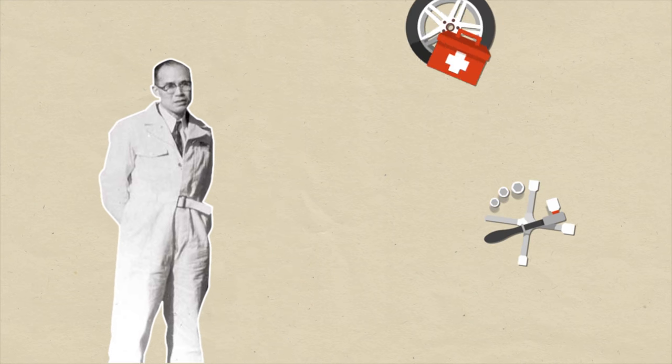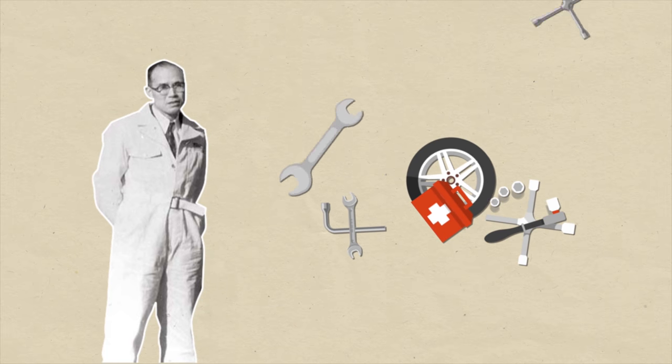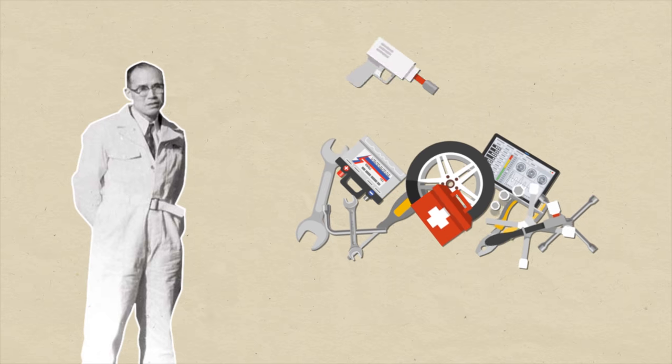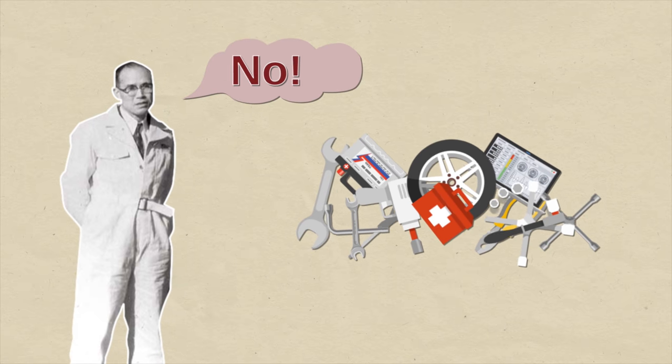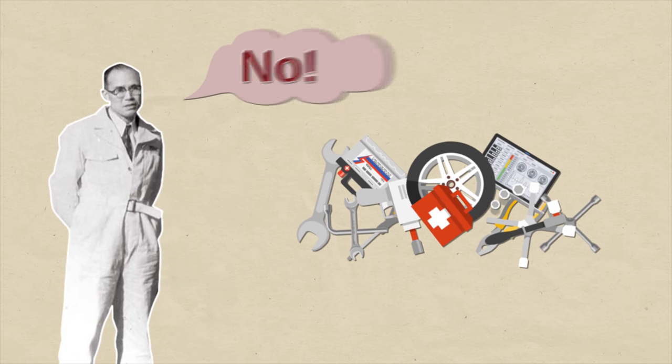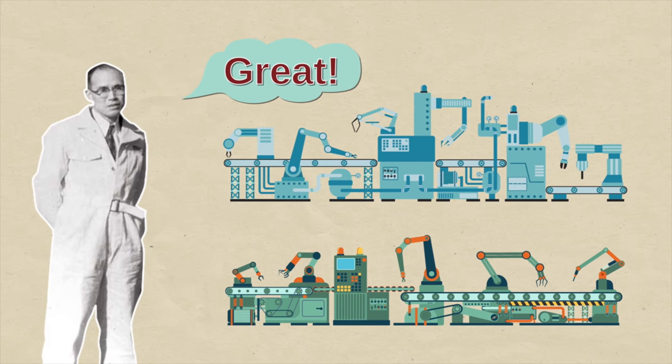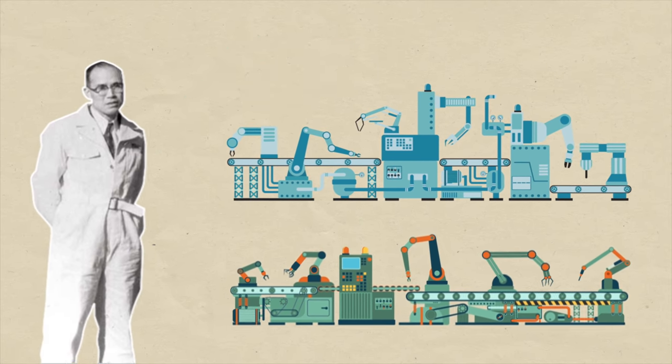His goal at this point is to exceed international standards. One of the things he does is make a decision to purchase the world's best machine tools. It doesn't make sense at the time because the company is too small. But Soichiro dreams big. How can you exceed international standards without the best tools?